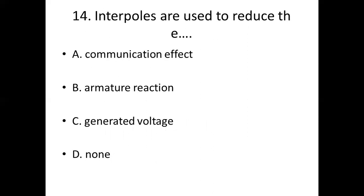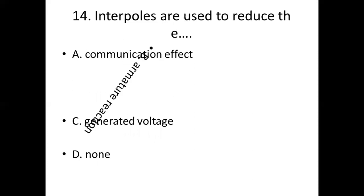Fourteenth bit. Interpoles are used to reduce the dash. Option A: Commutation effect. Option B: Armature reaction. Option C: Generated voltage. Option D: None. Answer: Option B, Armature reaction.